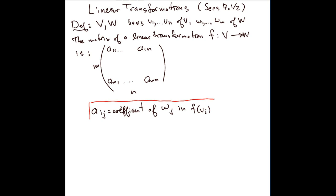Notice that you have n choices of j and you have m choices of i here, and so that gives you a total of m times n entries, which is of course what you have in an m by n matrix.